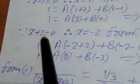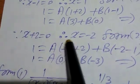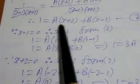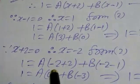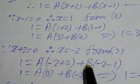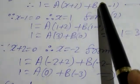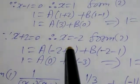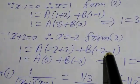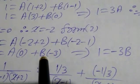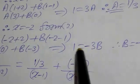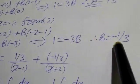Next, since (x plus 2) is equal to 0, therefore x is equal to minus 2. From equation 2: 1 is equal to A into (minus 2 plus 2) plus B into (minus 2 minus 1). That gives 1 is equal to A into 0 plus B into minus 3, so 1 equals minus 3B. Therefore B is minus 1 upon 3.